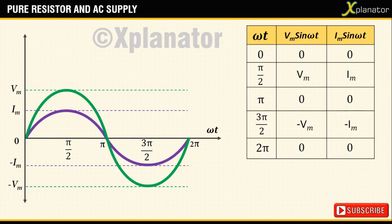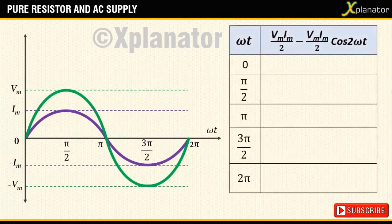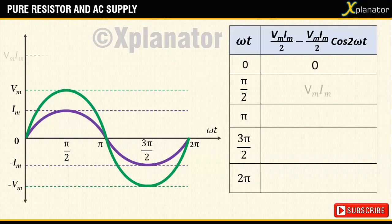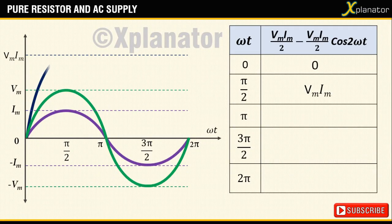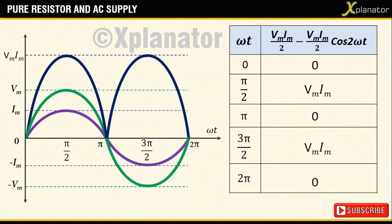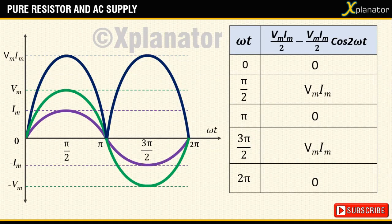Next, to plot the power plot on the same plane, tabulate the values for the power equation. You will observe that during calculations the value for power does not go negative for any value of omega t, because in the negative half as voltage and current are both negative, their resultant multiplication turns out to be positive.